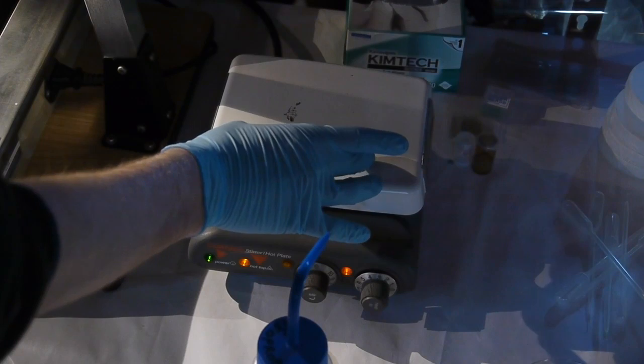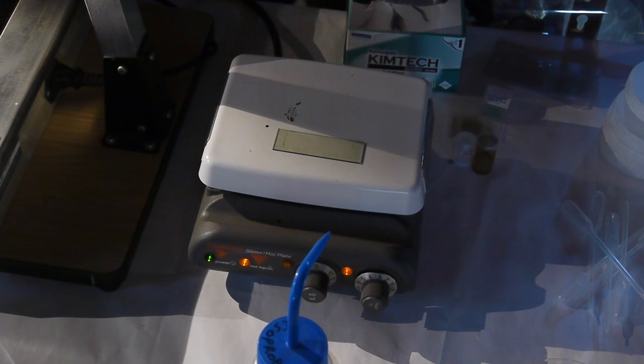Next, I put the microscope slide on the hot plate at about 100 degrees C for one minute. This will drive off all of the solvents in the photoresist to make sure that there's just that base polymer left.